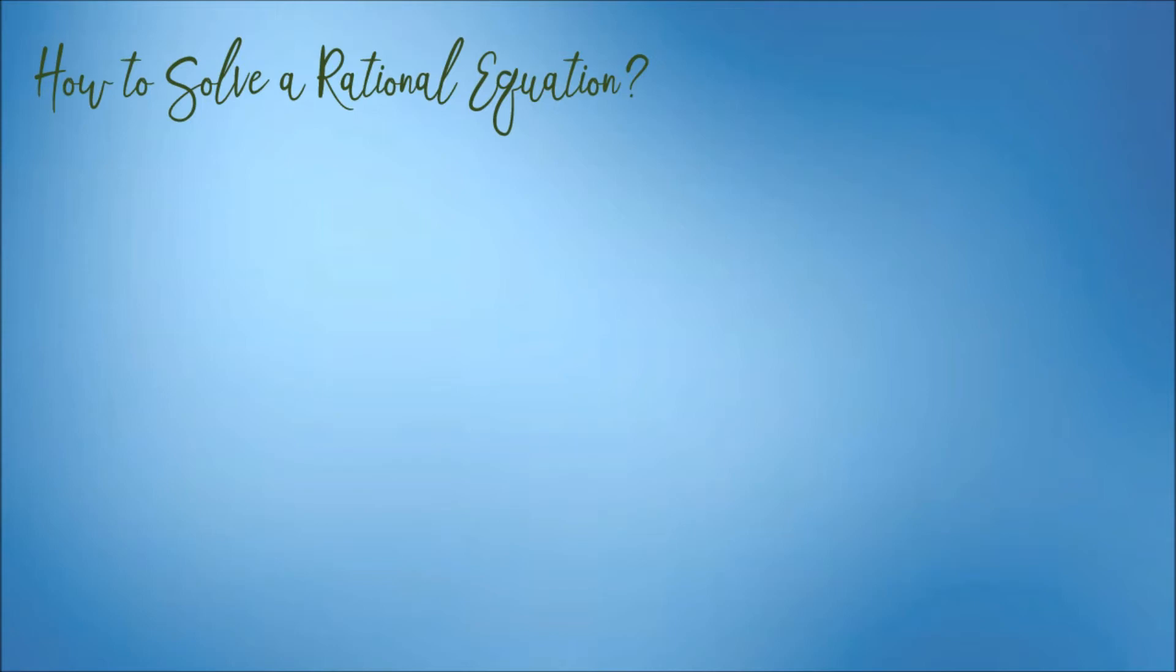This is the continuation of the topic, solving rational equation. This time, we have another example. Solve for the value of x of this rational equation: 2x plus 1, all over x minus 1, is equal to 8.